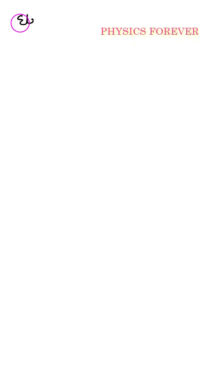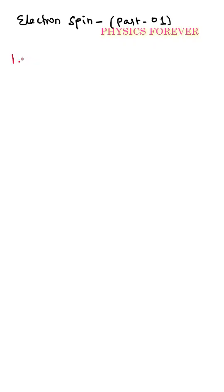In the next class, we will continue. Today, electron spin part 2. We have already discussed some of the properties in the last classes. Today, first, we know what is meant by spin angular momentum.